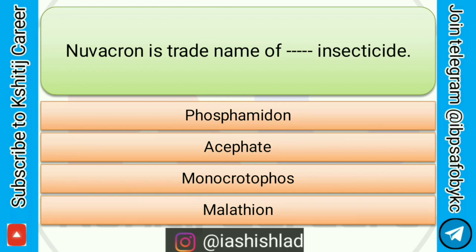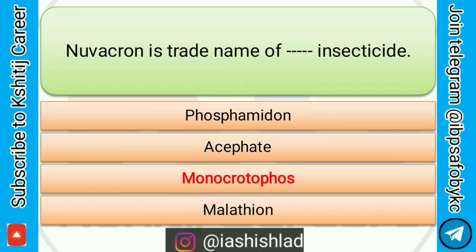Next question is: Nevacron is the trade name of dash dash insecticide. Options are: phosphamidon, acephate, monocrotophos. Correct answer is monocrotophos.